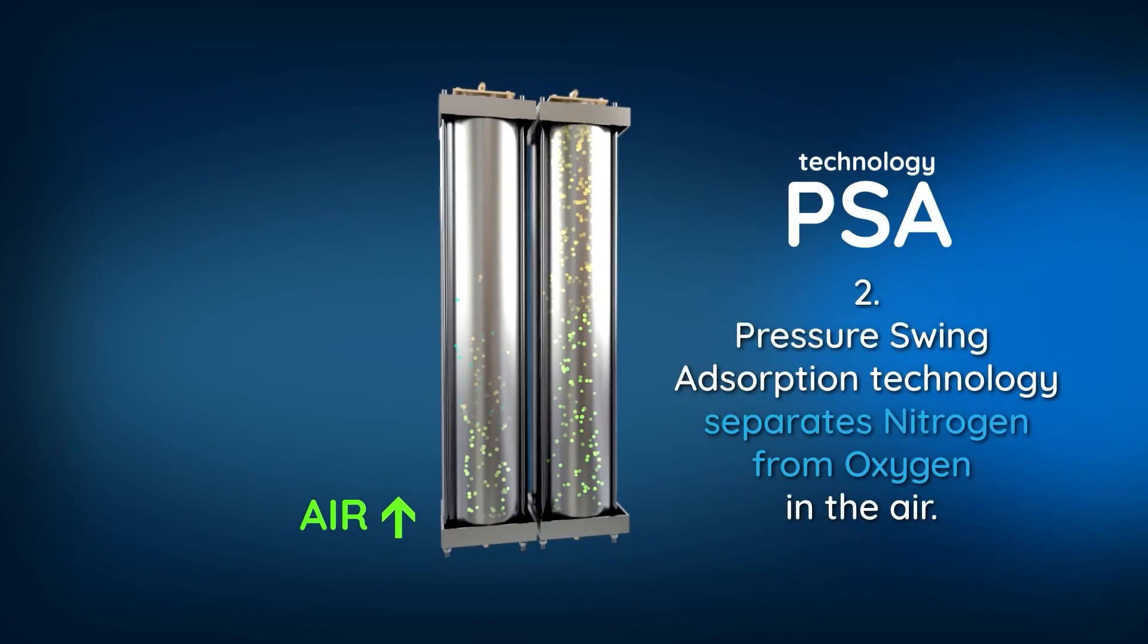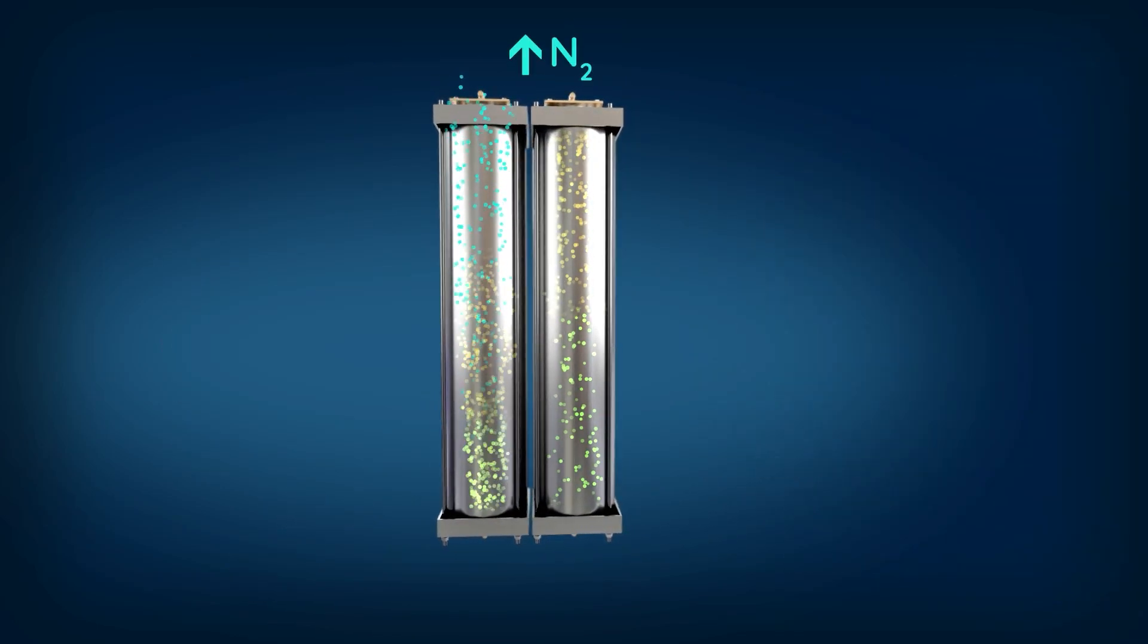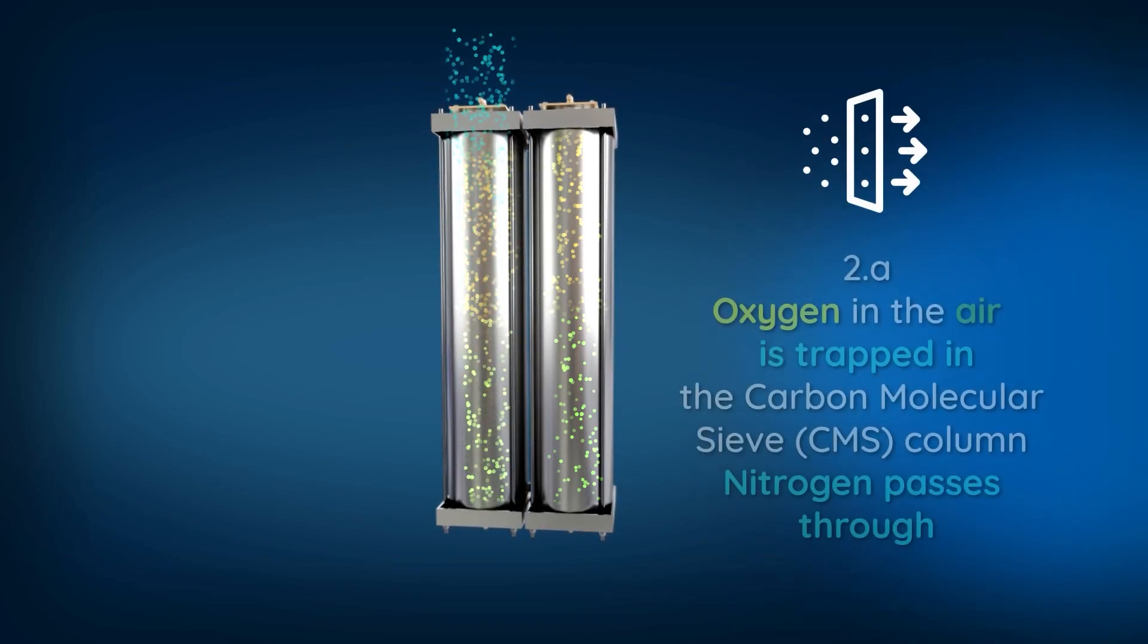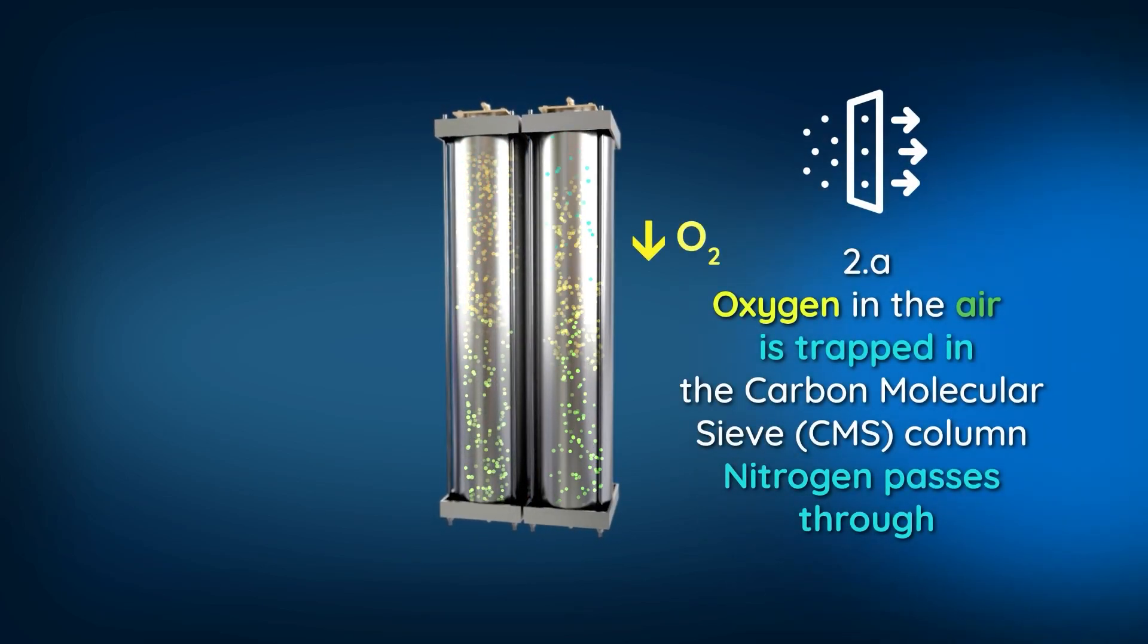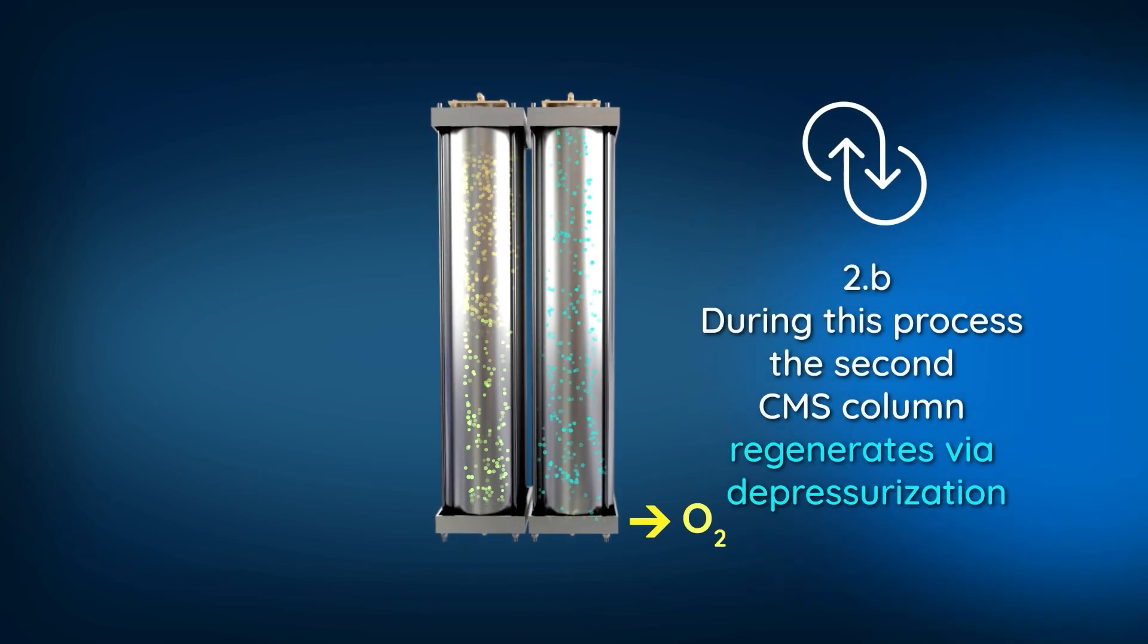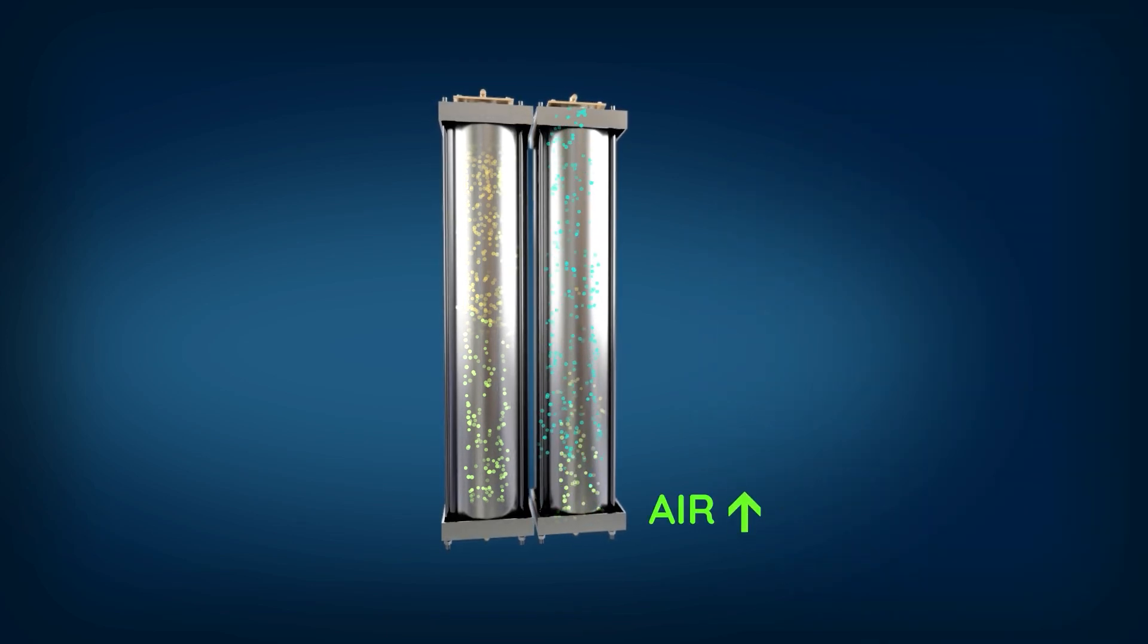Pressure swing adsorption technology separates nitrogen from oxygen in the air. Air passes through a carbon molecular sieve column to separate nitrogen from air. During this process, the second CMS column regenerates via depressurization.